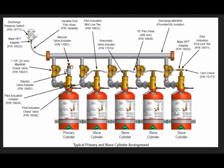We have here one, two, three, four, five cylinders. The first cylinder is called the primary cylinder — remember this. The primary cylinder is where the pilot actuations are connected. Every cylinder after the primary is called a slave cylinder, so remember: first is primary, the rest are slave cylinders.